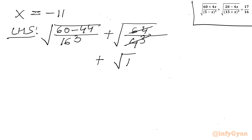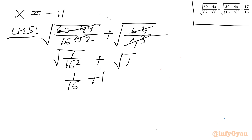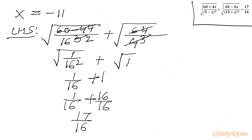Minus 44 is 16. So we can cancel this and write power 2. So it will be left 1 over 16 squared, which equals 1 over 16 plus 1. We can write 1 over 16 plus 16 over 16. So this gives us 17 over 16, which is our RHS — hence verified.